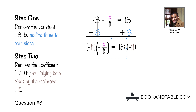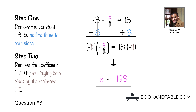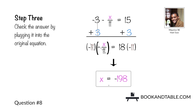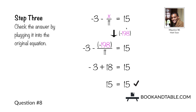The 11s cancel out, leaving us with x on the left side. On the right side, 18 times negative 11 is negative 198. So the answer to question number eight is x is equal to negative 198. We can check this by plugging it into the original equation: negative 3 minus x over 11 is equal to 15. When we do so, we wind up with negative 3 minus negative 198.